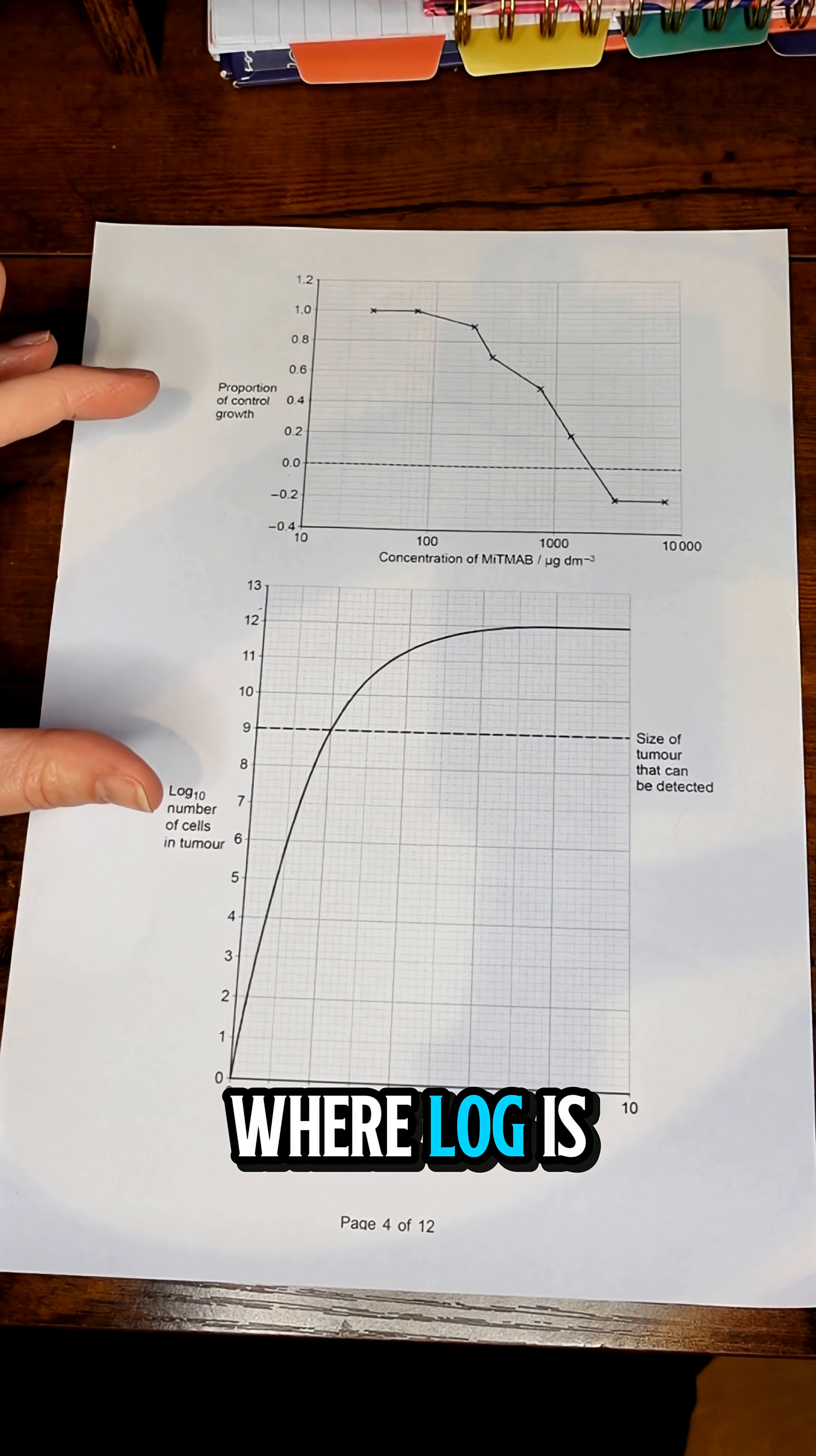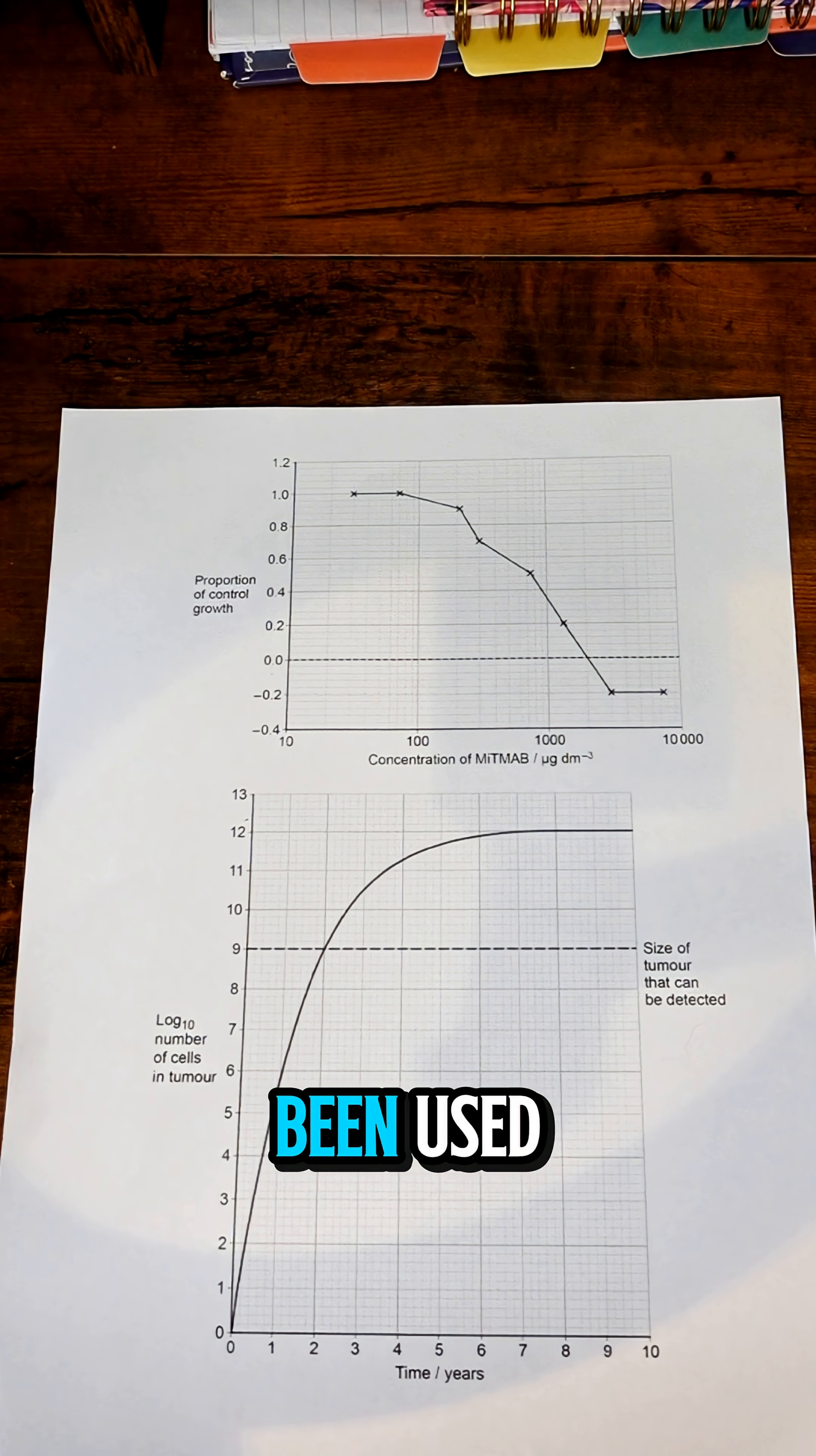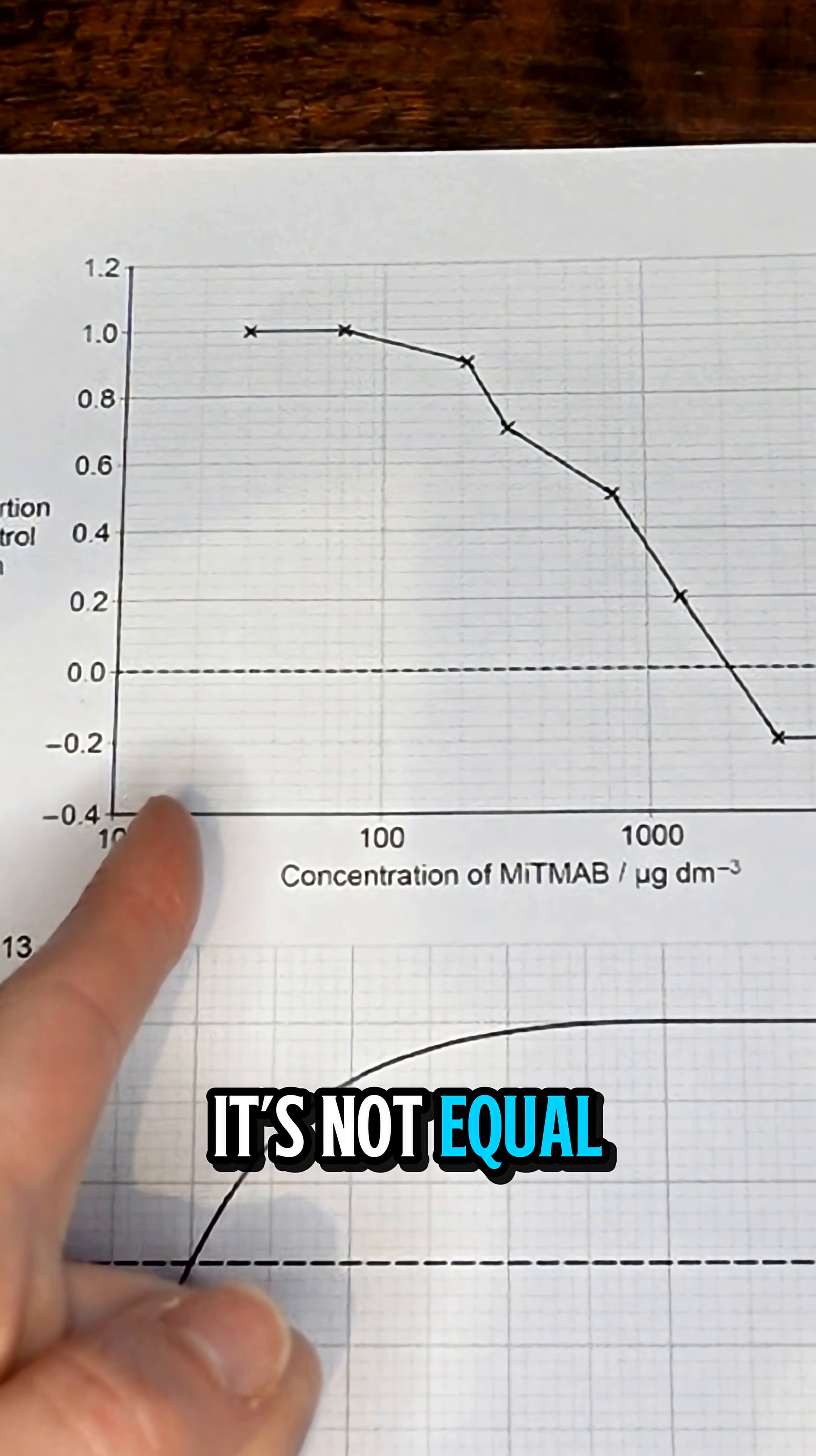We have two different examples here where log is being used. In this example, we actually have log graph paper, and we can tell this by looking at the distance between each of these lines - it gets smaller and smaller, not equal distances.